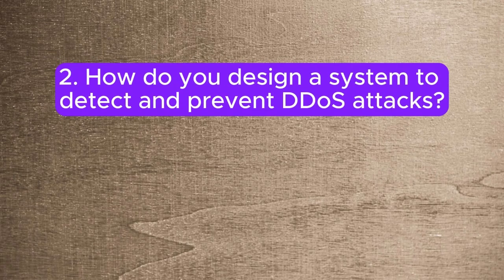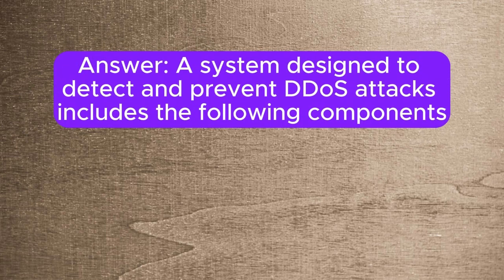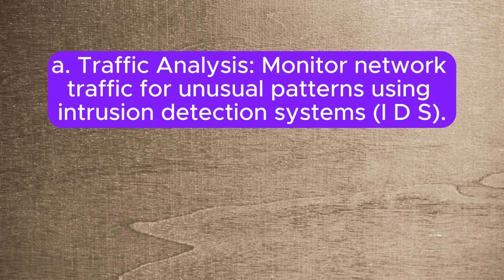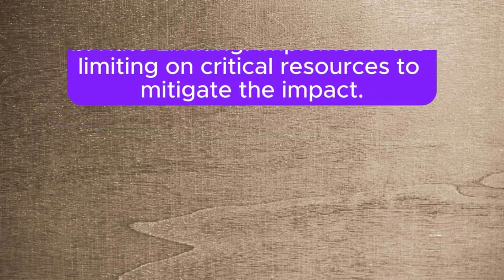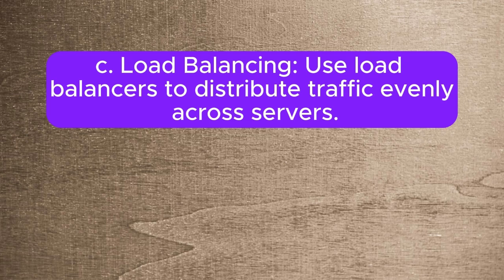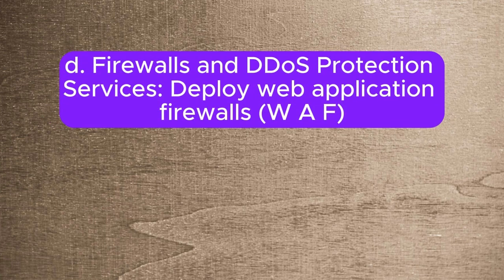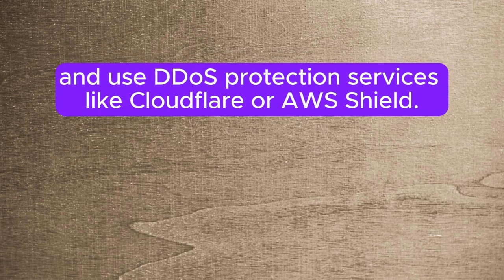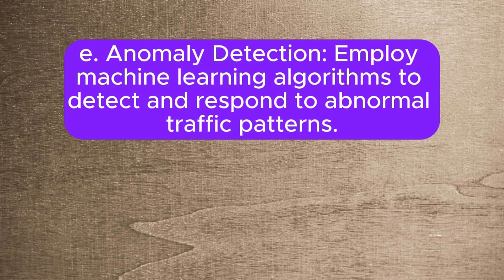Question 2: How do you design a system to detect and prevent DDoS attacks? A system designed to detect and prevent DDoS attacks includes the following components: (A) Traffic analysis — monitor network traffic for unusual patterns using intrusion detection systems (IDS); (B) Rate limiting — implement rate limiting on critical resources to mitigate the impact; (C) Load balancing — use load balancers to distribute traffic evenly across servers; (D) Firewalls and DDoS protection services — deploy web application firewalls (WAF) and use DDoS protection services like Cloudflare or AWS Shield; (E) Anomaly detection — employ machine learning algorithms to detect and respond to abnormal traffic patterns.